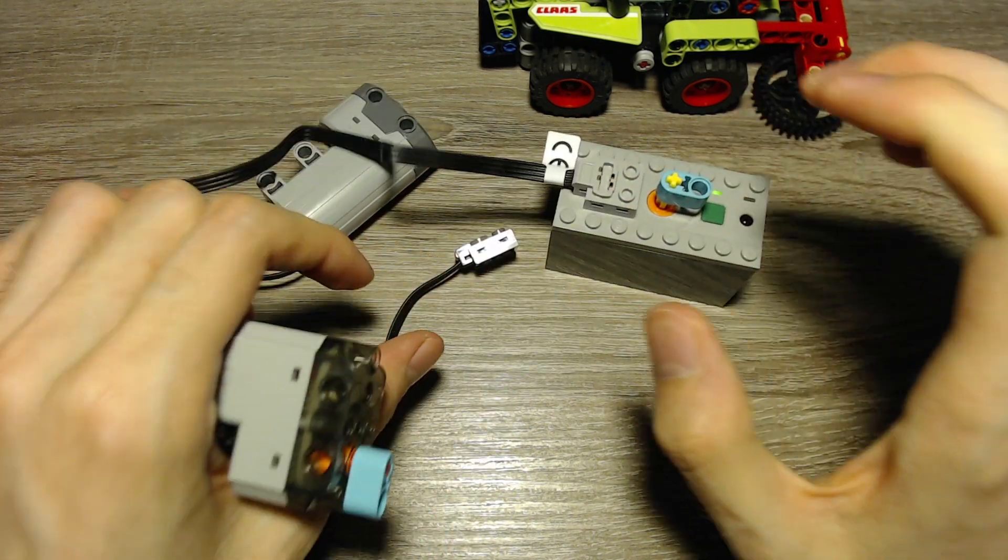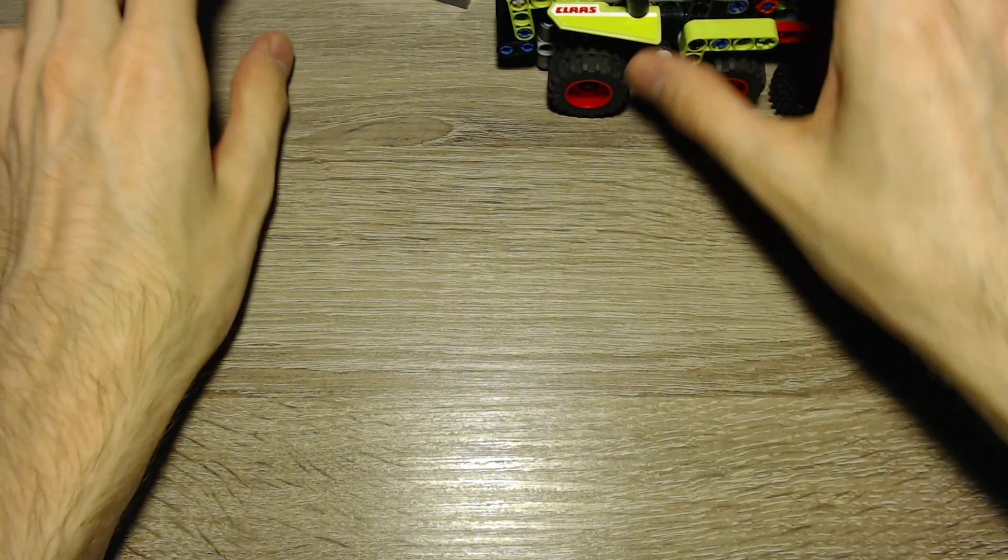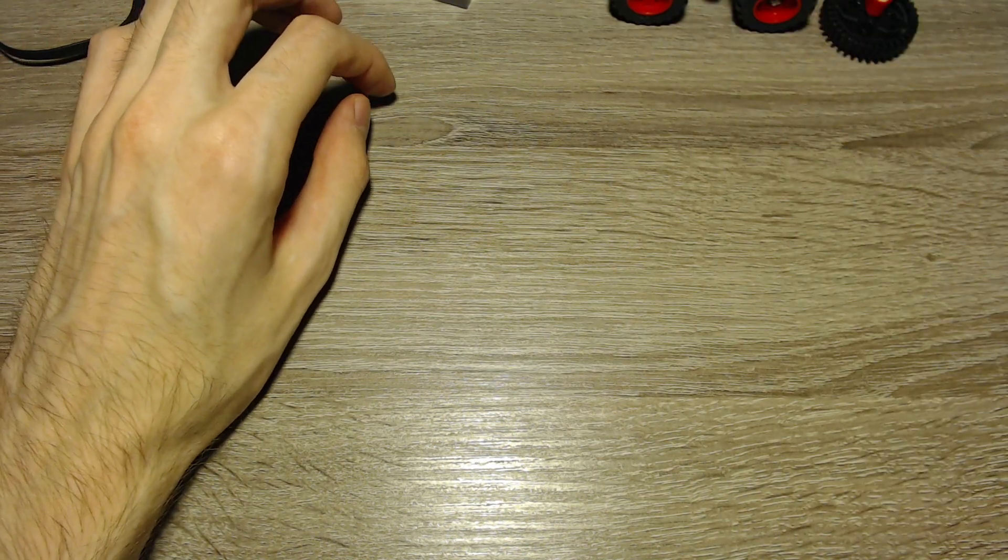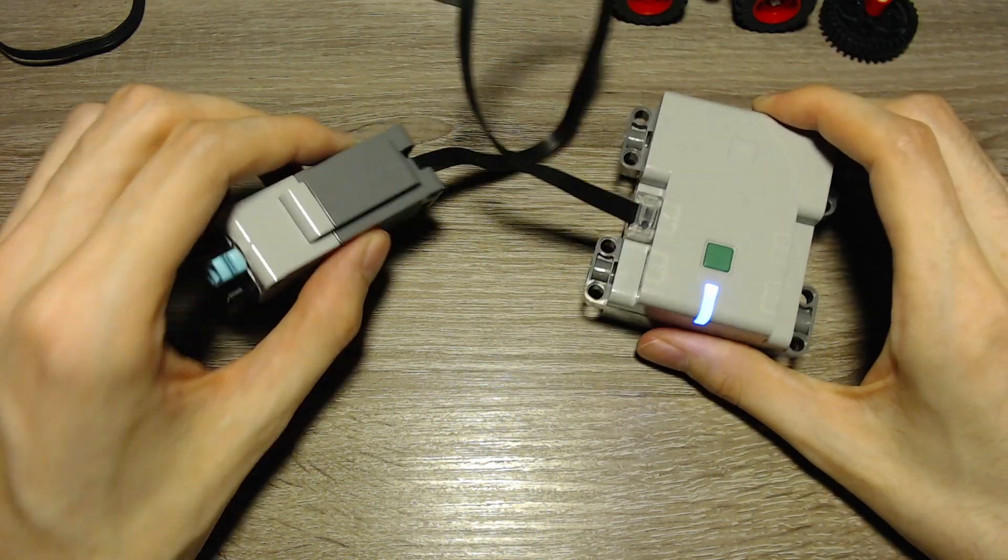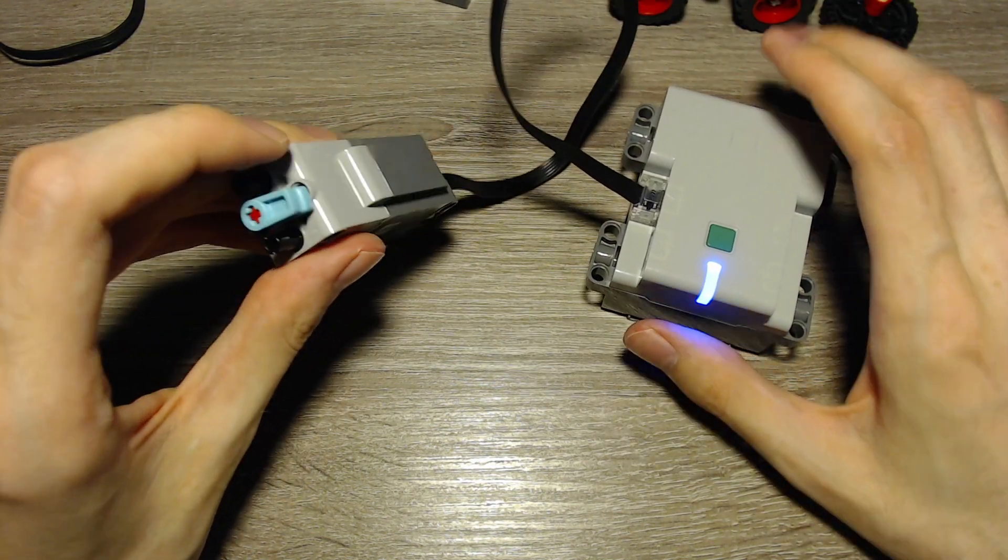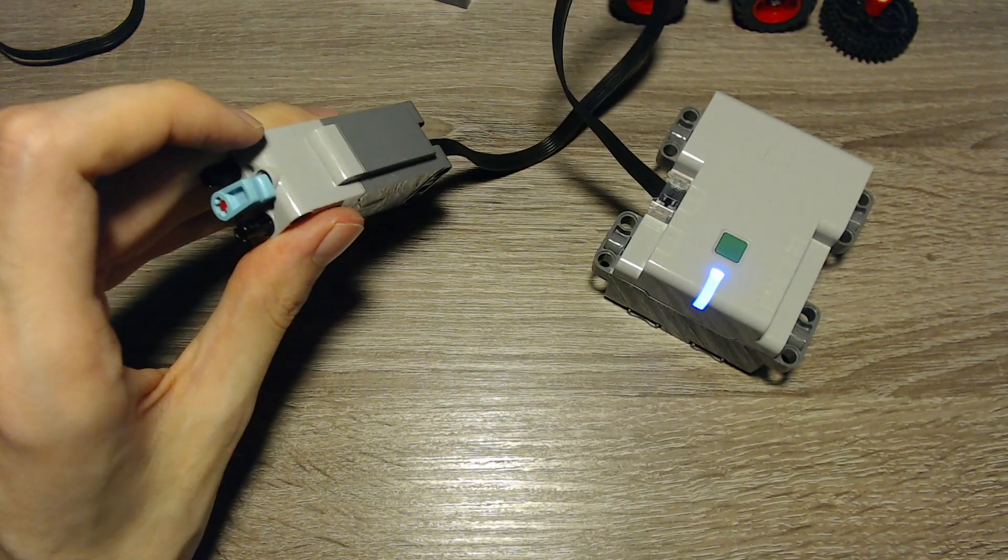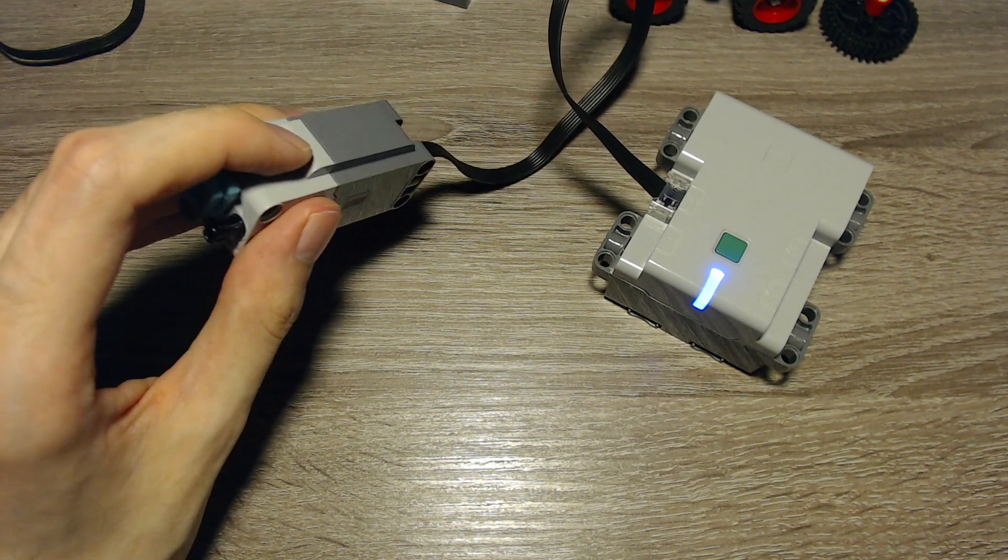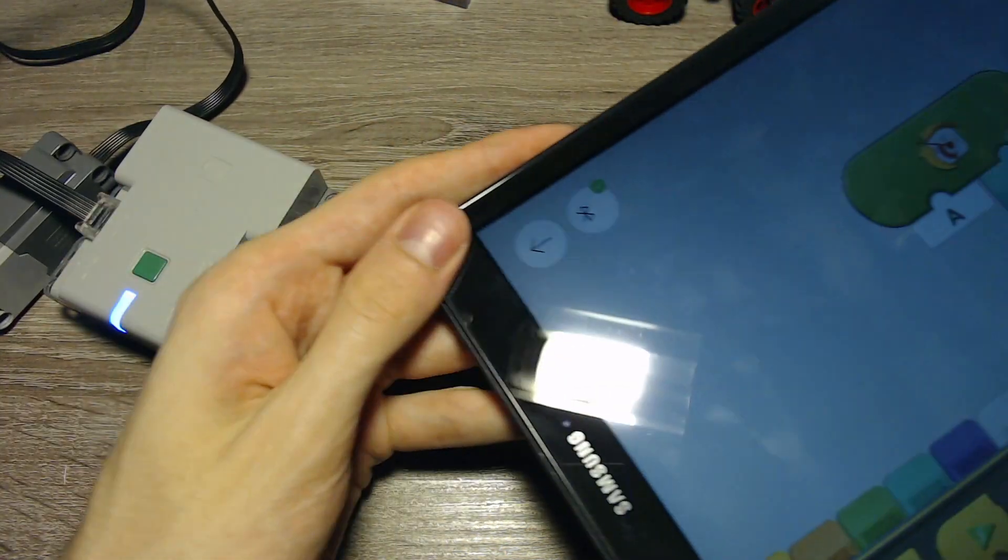But now let's get to the solution that Powered Up uses. I got a Powered Up hub and a Powered Up motor. This is the hub used in Control Plus models, and the motor used in Control Plus models, the large motor, and I've got the Powered Up app with a program.